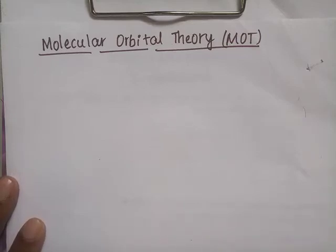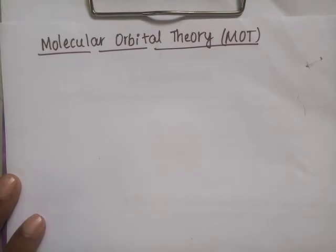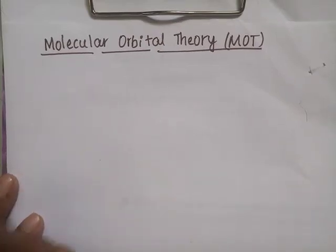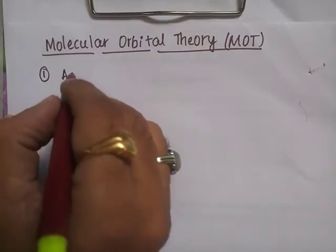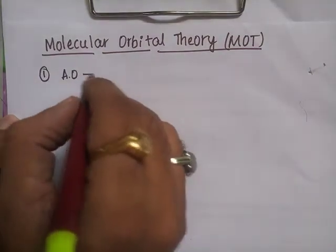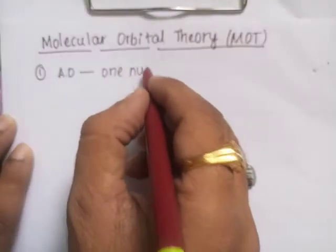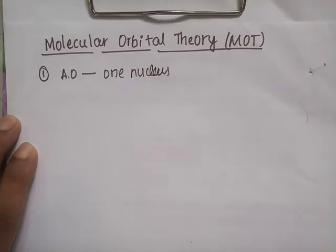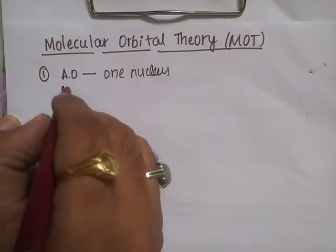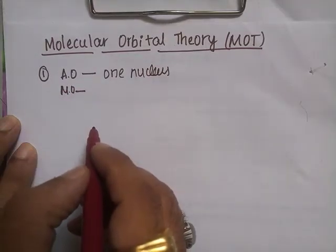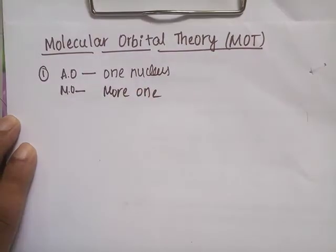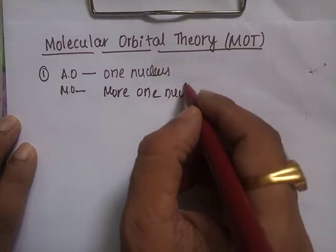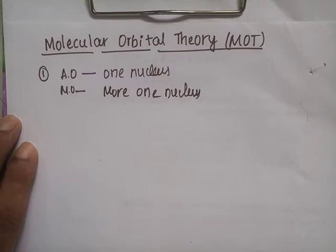Let us discuss about the Molecular Orbital Theory. According to molecular orbital theory, an atomic orbital will be influenced by only one nucleus, whereas the molecular orbital is influenced by more than one nucleus. That is the key difference between the atomic orbital and molecular orbital.